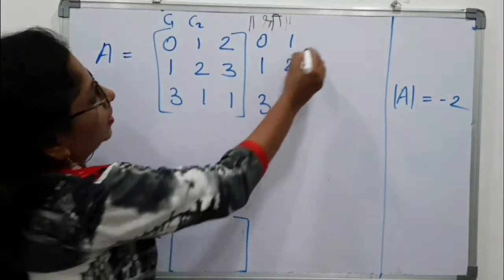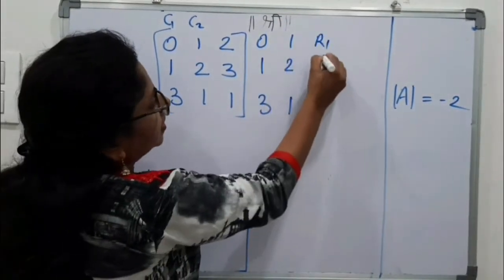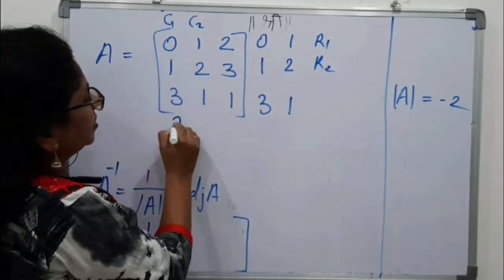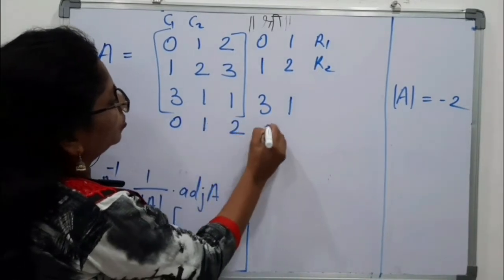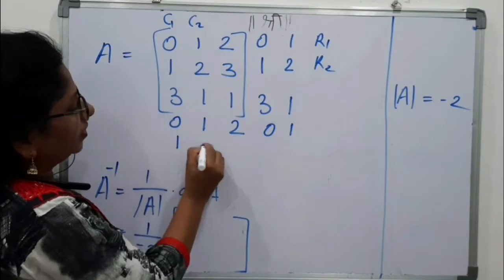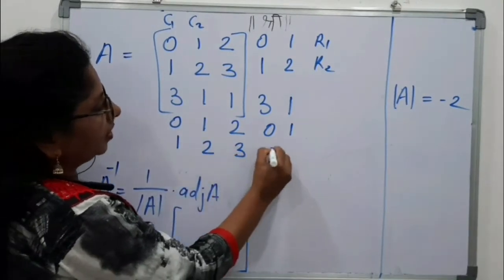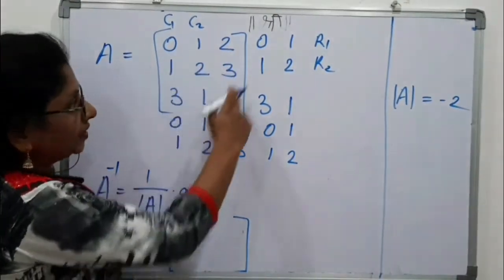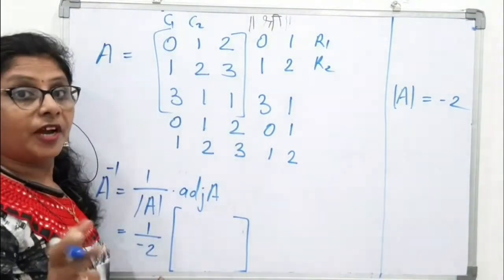Now this is R1. This is R2. Repeat these R1 and R2 here. 0, 1, 2, 0, 1. Then second 1, 2, 3, 1, 2. Now your 3 by 3 matrix became 5 by 4 matrix.